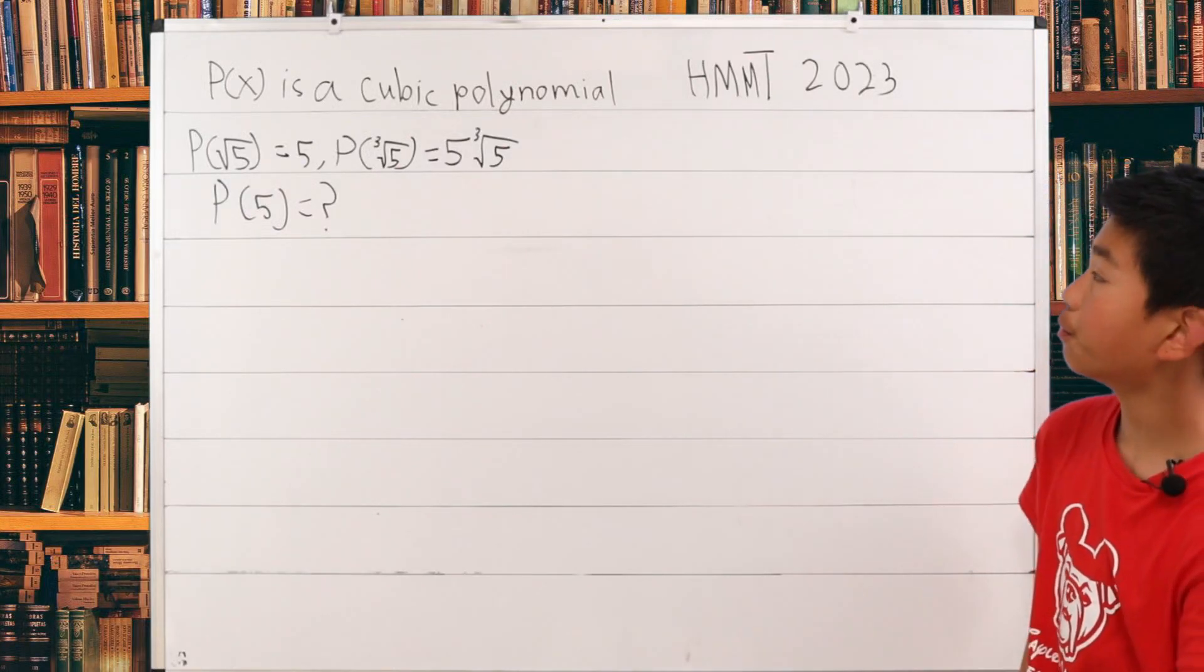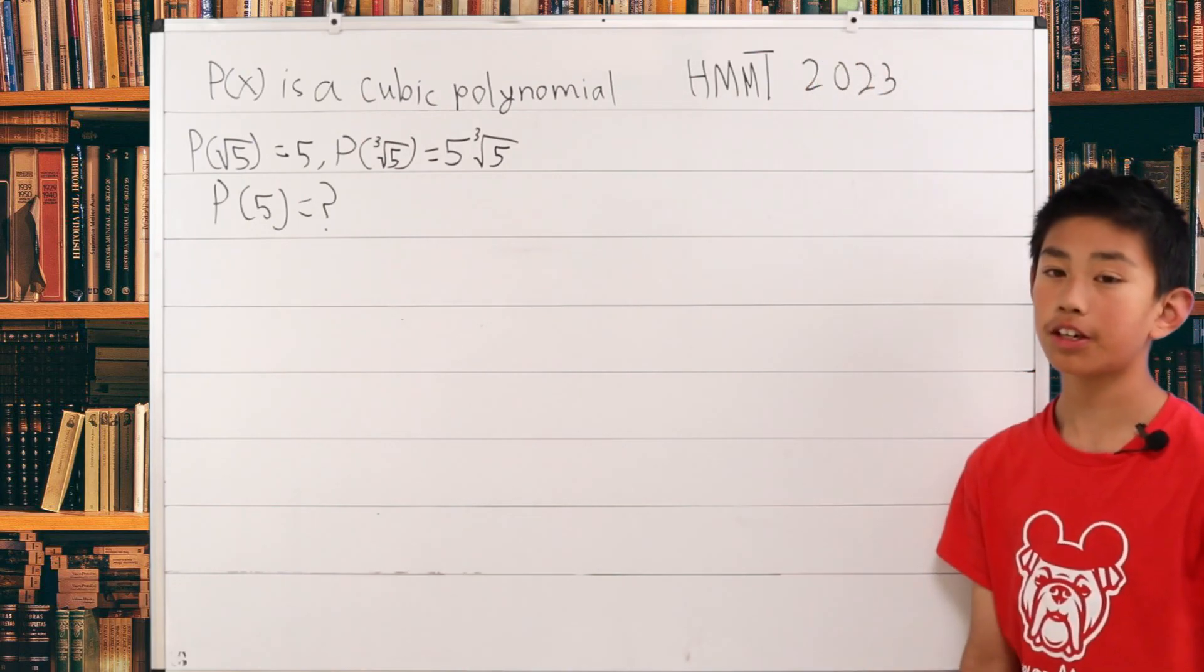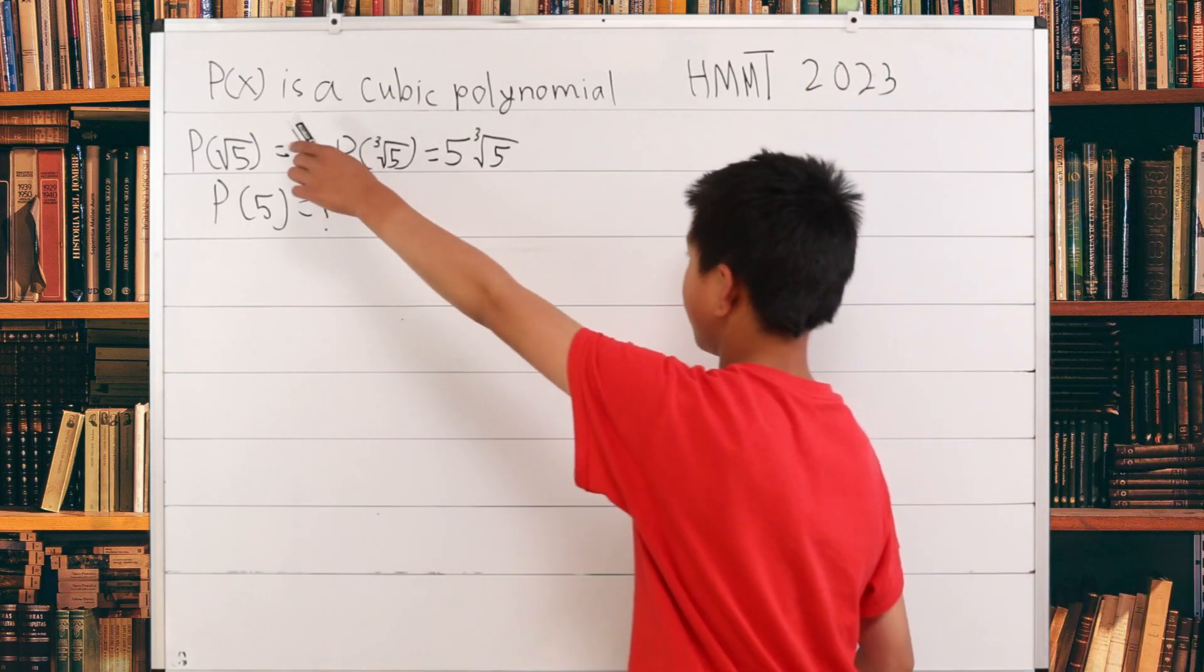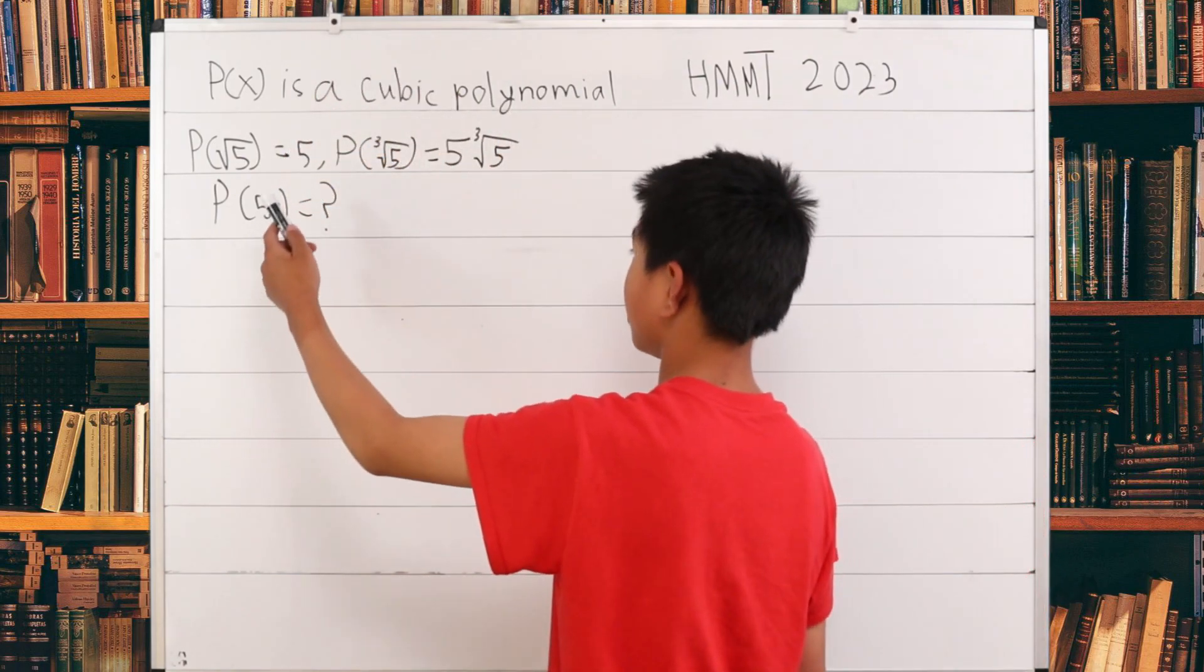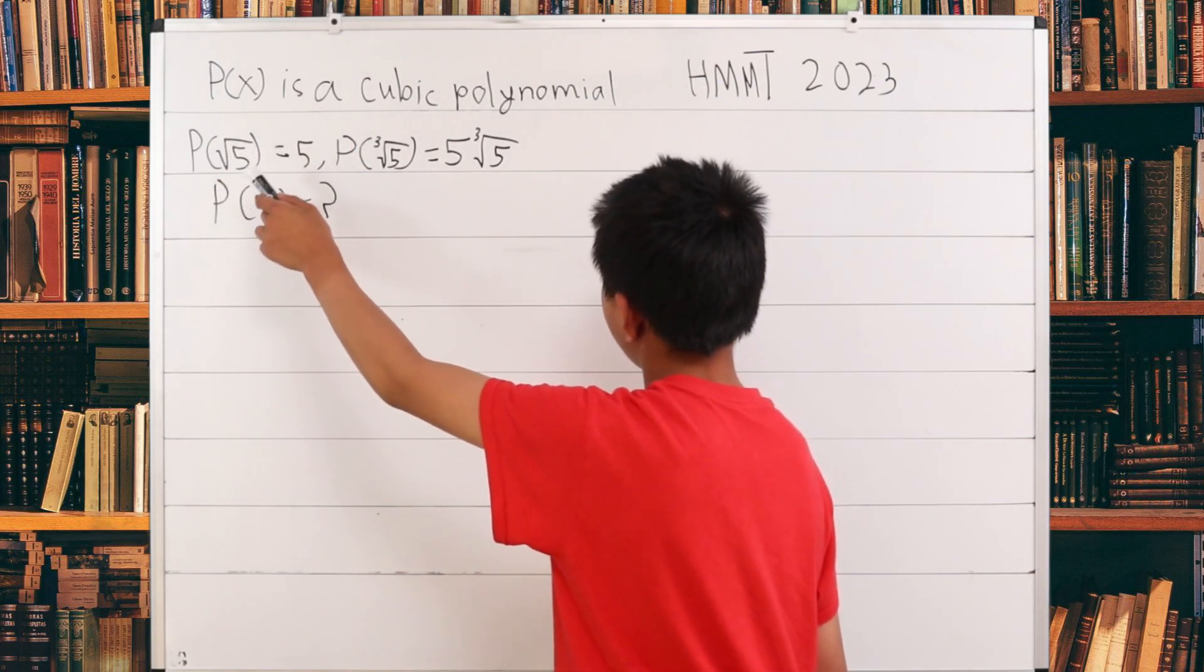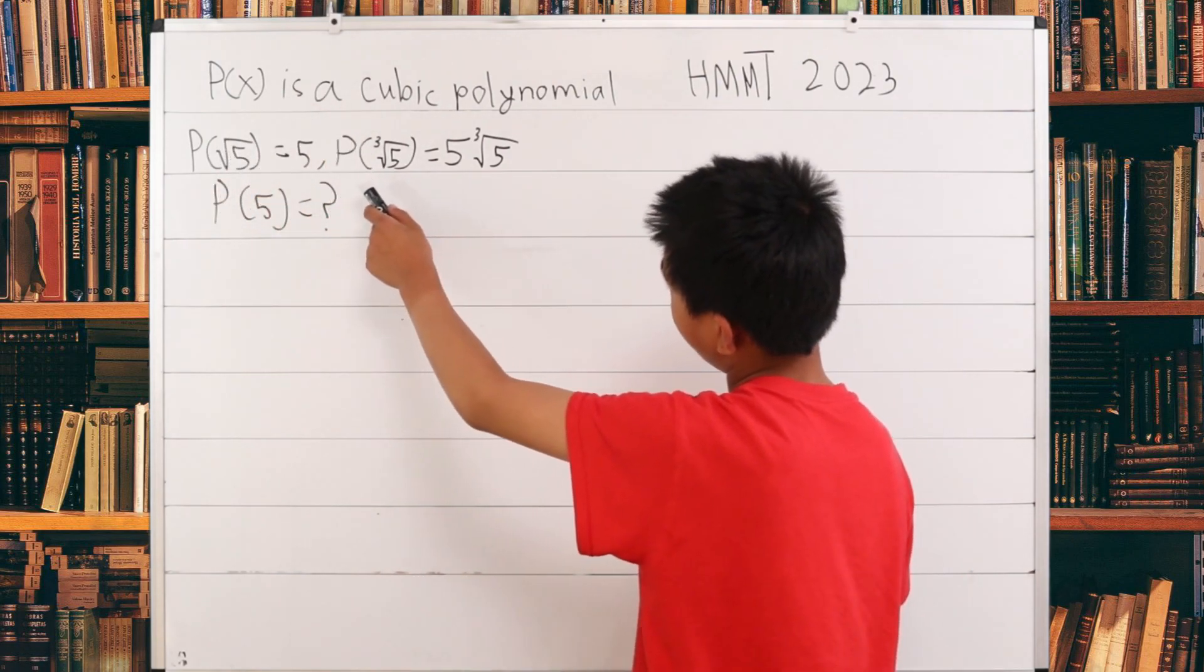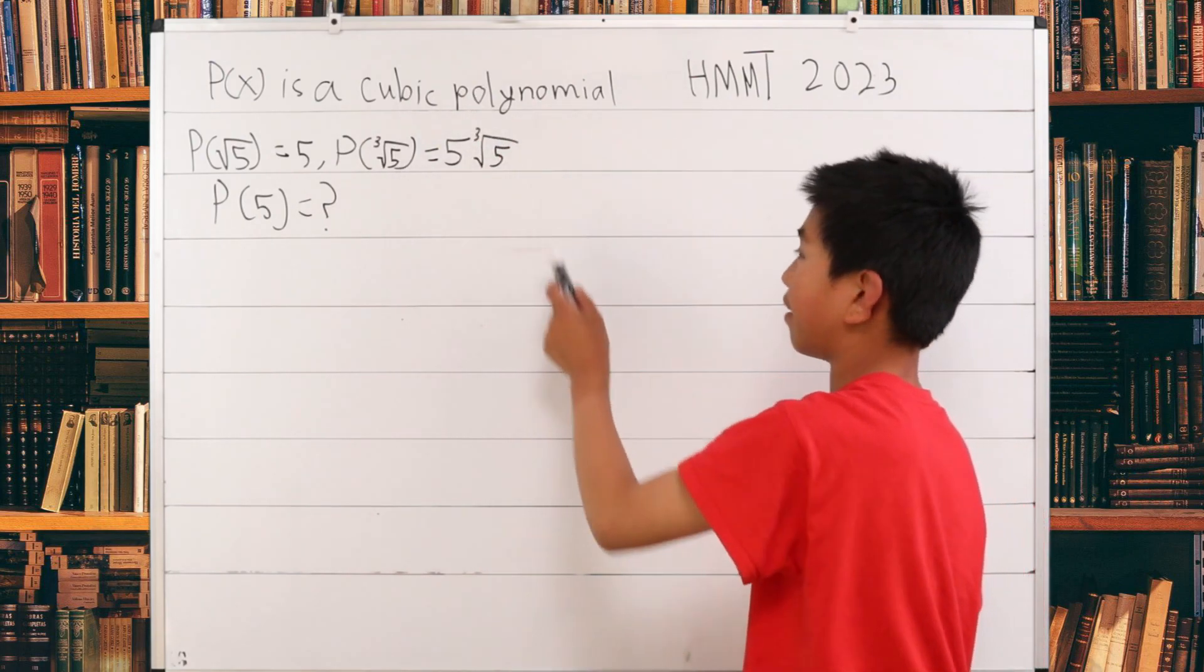Today, we have a problem from the HMMT of 2023. We are given that P(x) is a cubic polynomial, very important. We are given two constraints: P(√5) = 5, and P(∛5) = 5∛5.